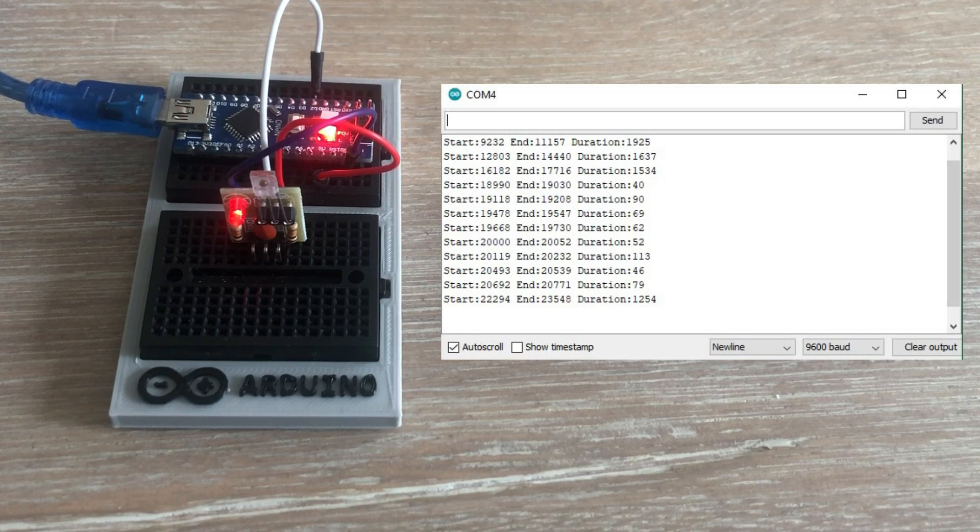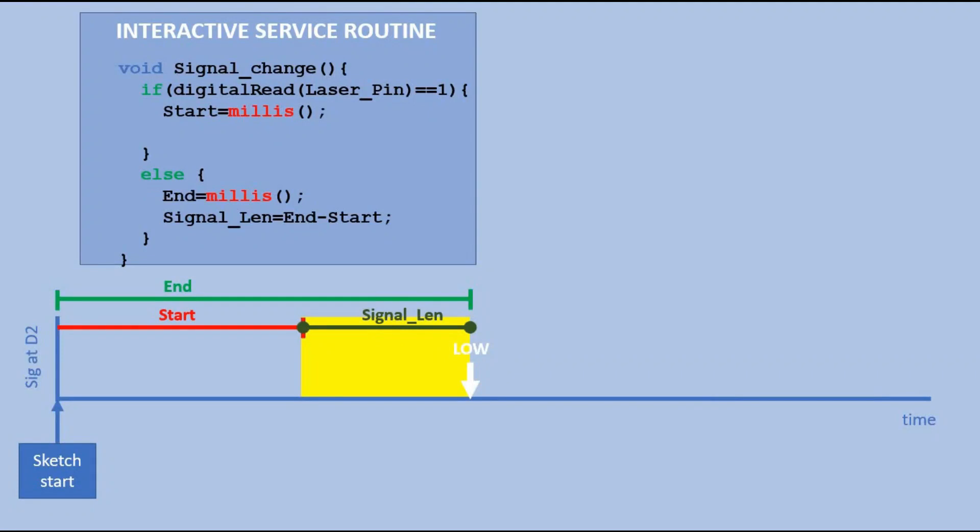So we are now able to detect the length of the laser signal. But we also need to be able to measure a duration of the pause in between signals, as the length of that pause helps us detect whether the transmission of the current letter or word is concluded. Let's look at the time graph at the point where we left off. We would need one more variable, pause len. After the laser signal finished, we are moving along the timeline until we reach the next change from low to high. In this case, we update the start variable with millis function. And now we can calculate the pause duration by subtracting end variable from start variable.